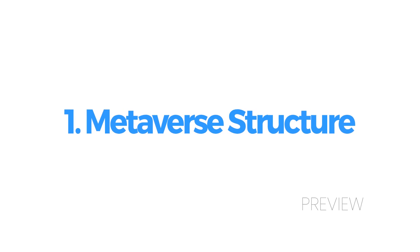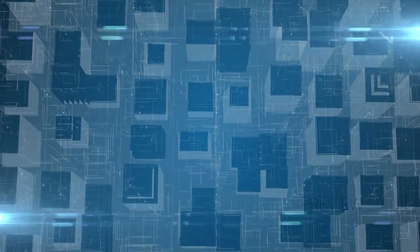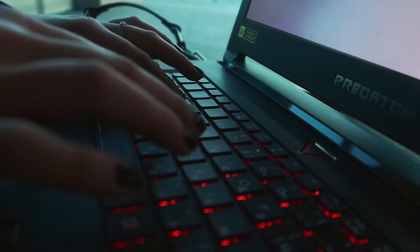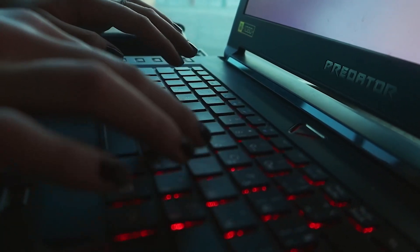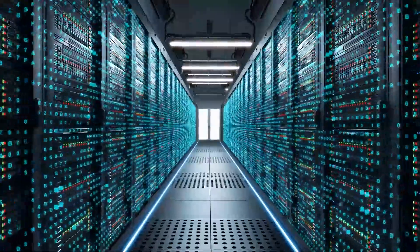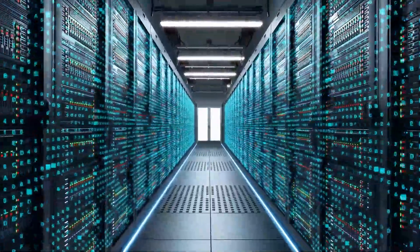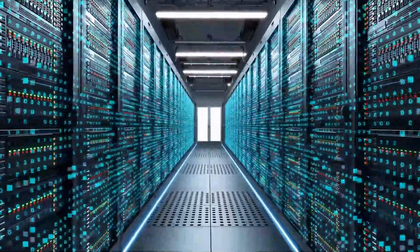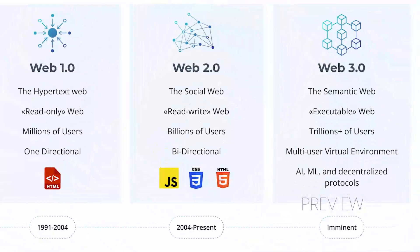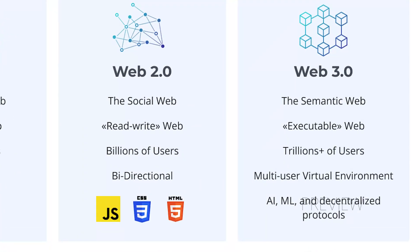Metaverse structure is defined as the following. A major part of the metaverse is Web 3.0, which is the advanced version of the internet. The internet is a centralized servers-based system, whereas Web 3.0 is a decentralized network system.